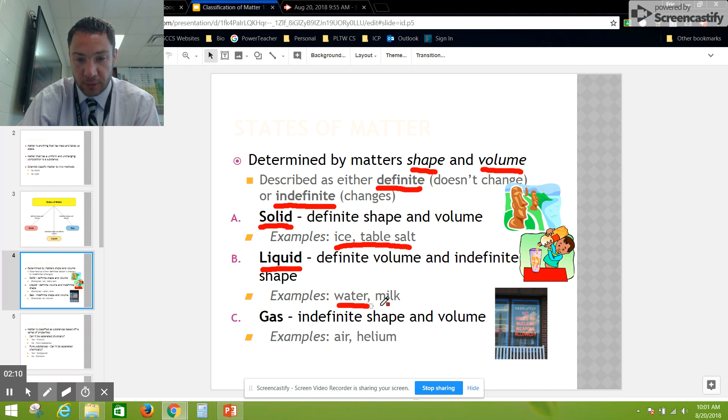The last one: gases. They have indefinite shape and volume, meaning their shapes and volumes can change. Their shape and volume will fit whatever container you put them in. Air and helium are examples of gases.